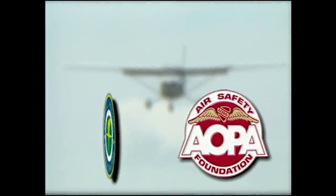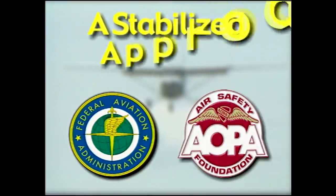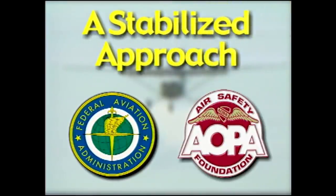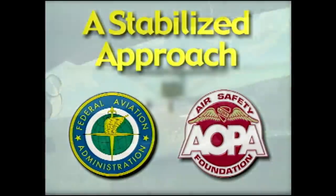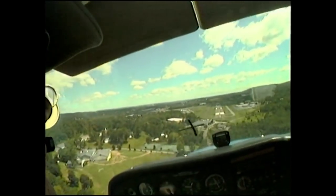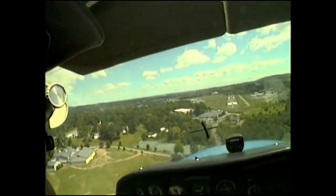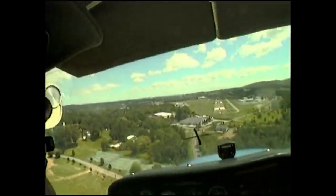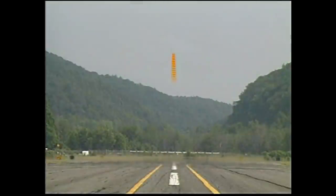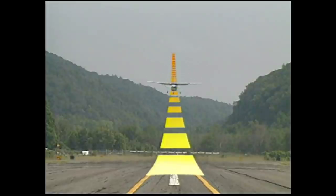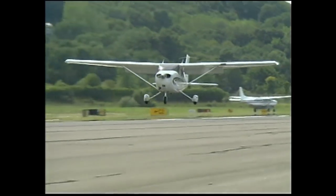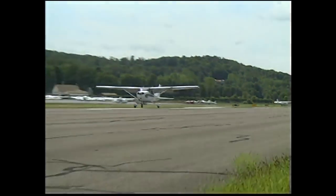The Air Safety Foundation and FAA recommend a stabilized approach. It's called stabilized because power and control inputs are basically static, yielding the proper airspeed and descent rate. The goal is to establish the proper approach angle, airspeed, power setting, and configuration by the time the pilot reaches a target altitude — say 500 or 1,000 feet above the airport elevation — so the airplane flies itself to the runway. If you're not in final configuration on airspeed and altitude, you're not ready to land.